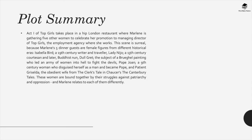Act 1 of Top Girls takes place in a high-end London restaurant where Marlene is gathering five other women to celebrate her promotion to managing director of Top Girls, the employment agency where she works. The scene is surreal because Marlene's five dinner guests are female figures from different historical eras.